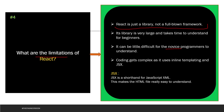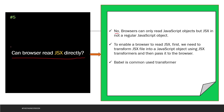Coding gets complex as React uses inline templating and JSX. ReactJS works on JSX, not directly HTML. JSX is a shorthand for JavaScript XML, which makes HTML files really easy to understand. The next question is: can a browser read JSX directly? The answer is no — a browser cannot read JSX directly, because browsers can only read JavaScript objects and JSX is not a regular JavaScript object.